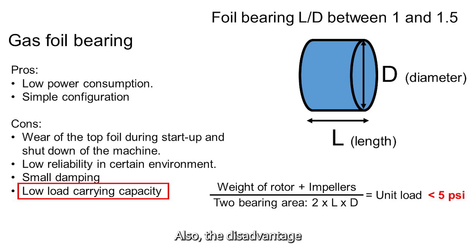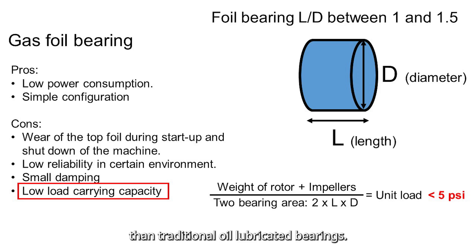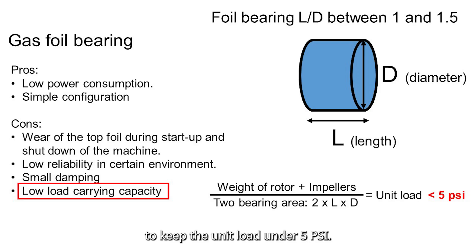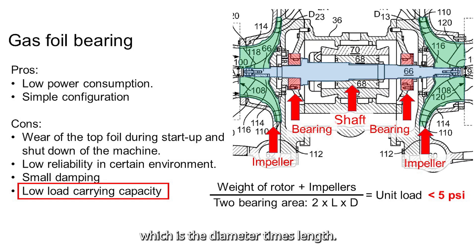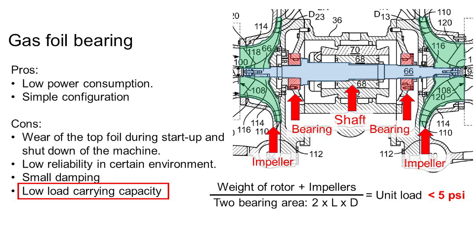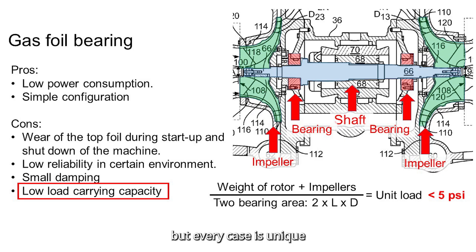At that point, bearing replacement is needed. Another disadvantage of airfoil bearings is lower load capacity than traditional oil-lubricated bearings. For design purposes, it is recommended to keep the unit load under 5 psi. To calculate this, take the total weight of your rotor and impeller and divide by the bearing area, which is the diameter times the length. This gives you the unit load. Some applications have successfully operated at 8 psi, but every case is unique and load limits should be evaluated carefully.